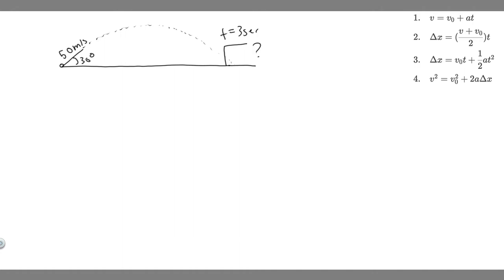So what do we know about this problem? We know that this projectile is going to be launched at 30 degrees and at 50 meters per second. We know it's going to travel in the air for three seconds, and it's going to land at some height and some distance away. So what we're trying to do is find those two distances.